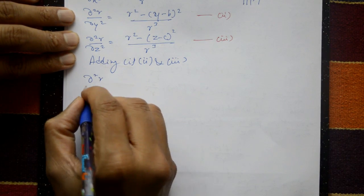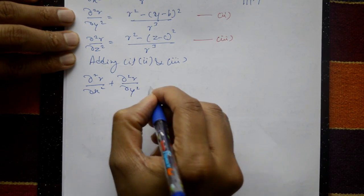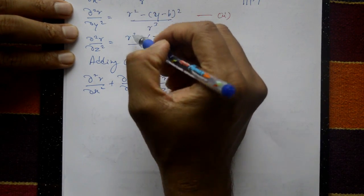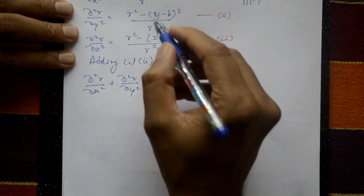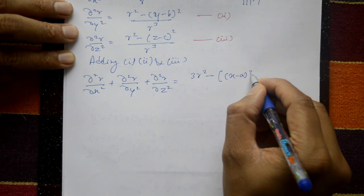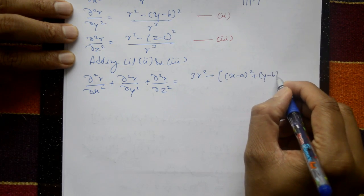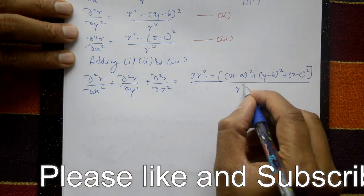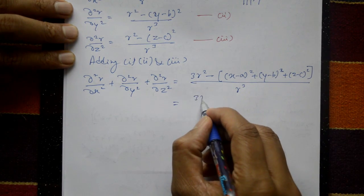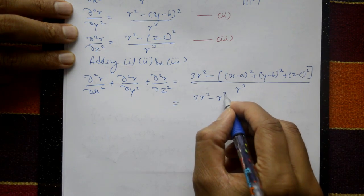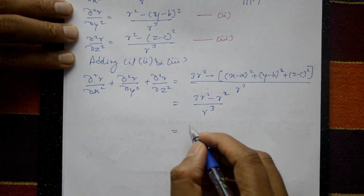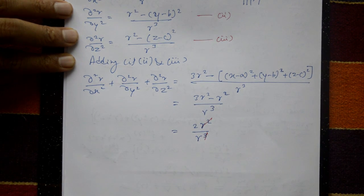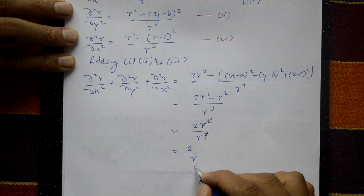Adding equations 1, 2, and 3: ∂²r/∂x² + ∂²r/∂y² + ∂²r/∂z² = [3r² - ((x-a)² + (y-b)² + (z-c)²)] / r³. Since (x-a)² + (y-b)² + (z-c)² = r², this equals (3r² - r²)/r³ = 2r²/r³ = 2/r. This is the required solution.